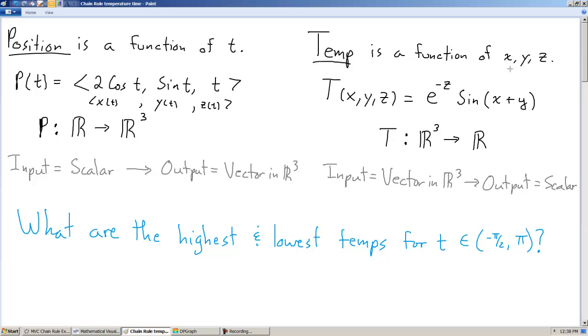Temperature is a function of x, y, and z. In other words, at every point in three-dimensional space, there's a unique temperature, and we can find that unique temperature by this function, e to the negative z times sine of x plus y. We input the x, y, and z, and we get out a temperature.